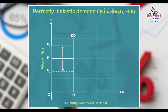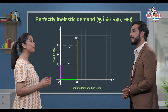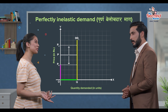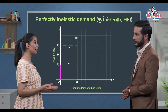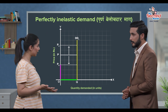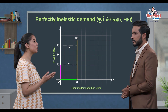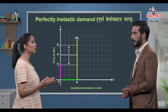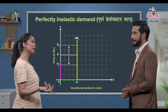The demand curve is parallel and vertical. When the price is at OP, the quantity demanded remains OQ. The curve is parallel to the y-axis, with price points P0, P, or P2 shown as dotted lines.